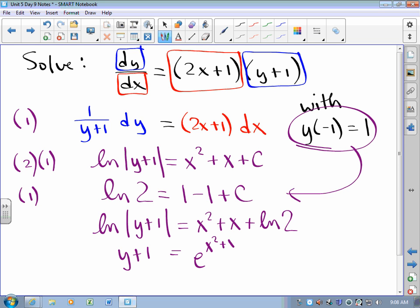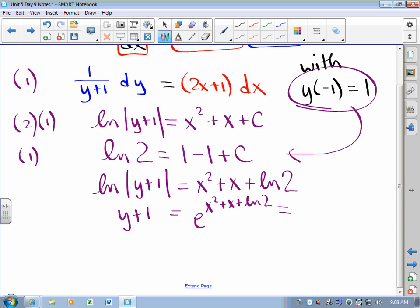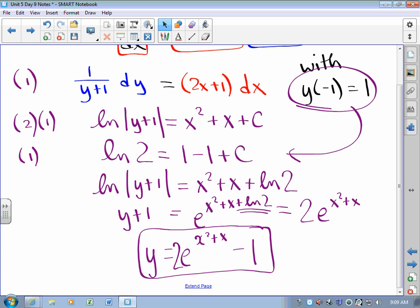e to the x^2 + x + ln 2. How could I remove the absolute value brackets? I remove the absolute value bars because y(-1) has to turn out positive, so I know that I'm on the positive end, not the negative end. We know that this +ln 2 means there was a times e^(ln 2) at some point, and e^(ln 2) is just 2. So y is 2e^(x^2+x) - 1.